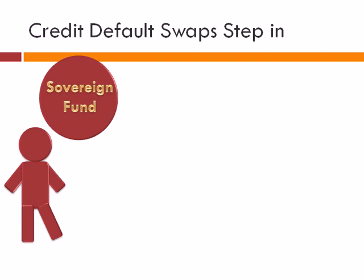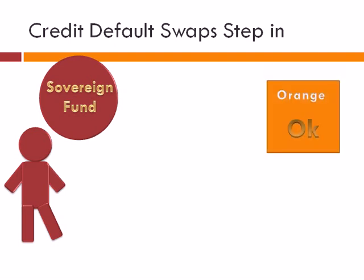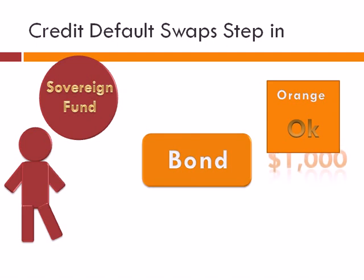The investment manager stumbled on company Orange. There was plentiful debt to buy — a bond maturing in 10 years for one thousand dollars. The problem: it's not rated high quality, only okay. And legally, this investment manager cannot purchase any debt that is not high quality because it could pose a risk to the fund.